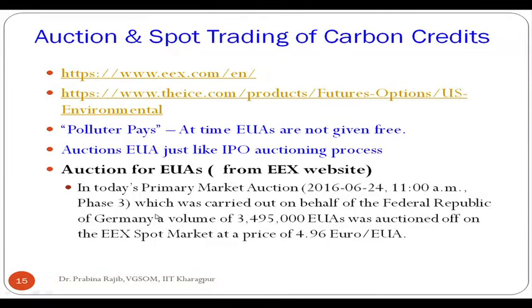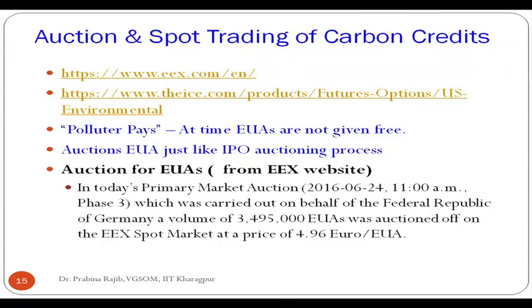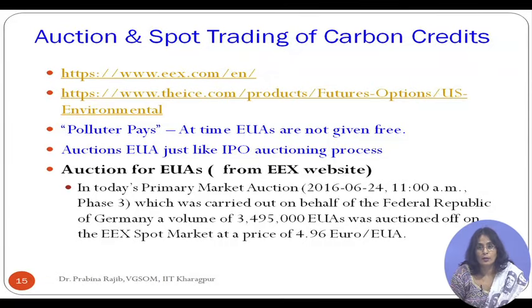Here is a real example from the EEX website: in today's primary market auction held on 24th June 2016 at 11 am on behalf of the German government, 3.495 million European Union Allowances were auctioned off on the EEX market at a price of 4.96 euro per unit of EUA. So 3.495 million EUAs were auctioned and buyers paid 4.96 euro to buy one unit of European Union Allowance.